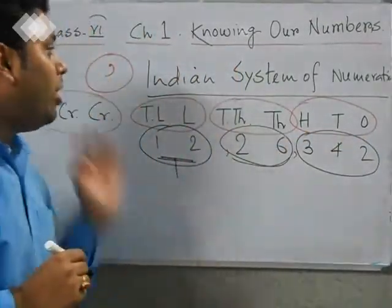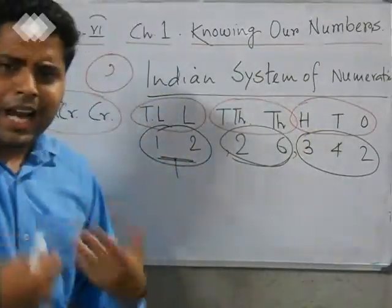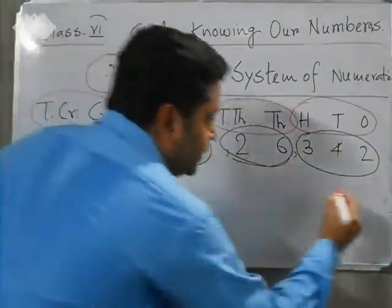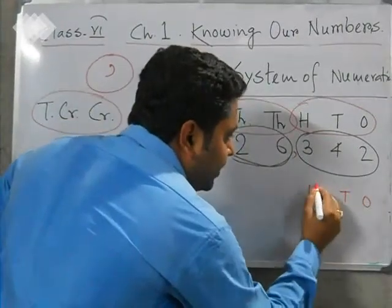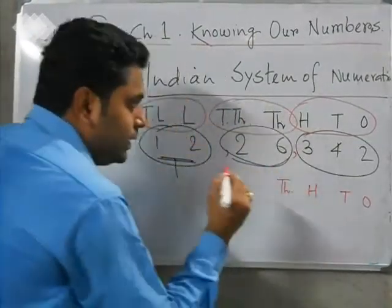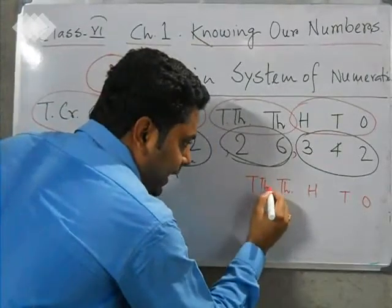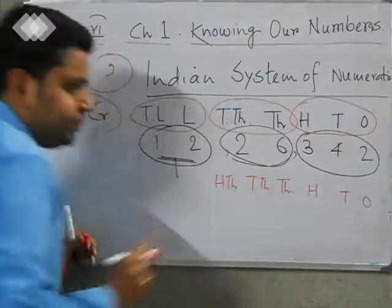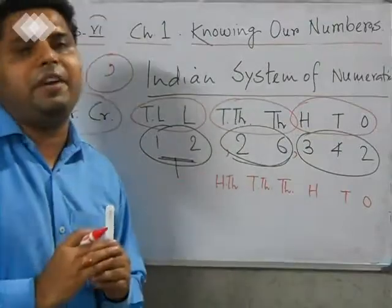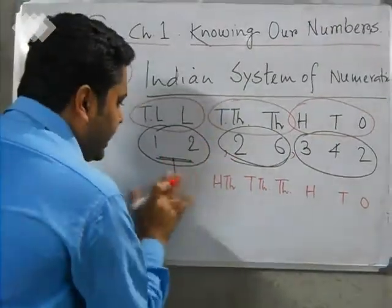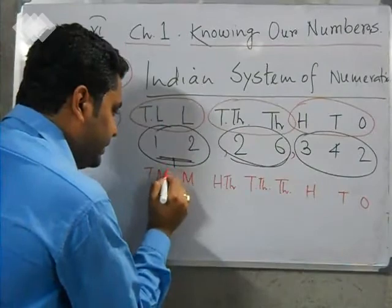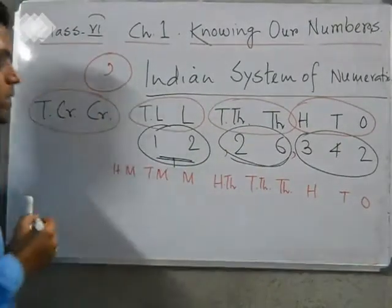This is the Indian system of numeration. Now, what is the international system of numeration? First of all, one, ten, and hundred are the same. Then comes thousand, ten thousand, and hundred thousand. One key difference: in the international system, all families have three members. So the families are: ones (one, ten, hundred), thousands (thousand, ten thousand, hundred thousand), and millions (million, ten million, hundred million).